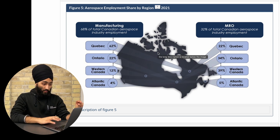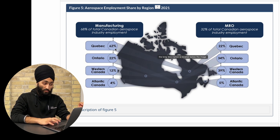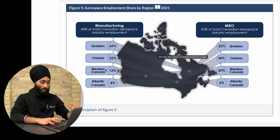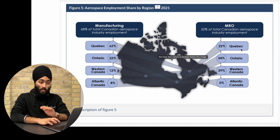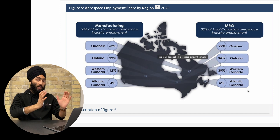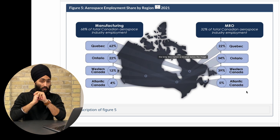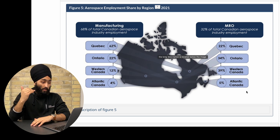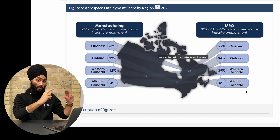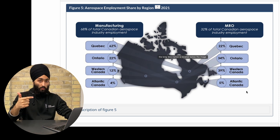Quebec is the province with 62% of the manufacturing jobs, and Ontario is second. On the MRO side, 22% of maintenance, repair and overhaul jobs are in Quebec, 34% in Ontario, and 39% in Western Canada. So now you have an idea — Quebec and Ontario are your top targets. Just pick these two provinces and start exploring colleges from there.